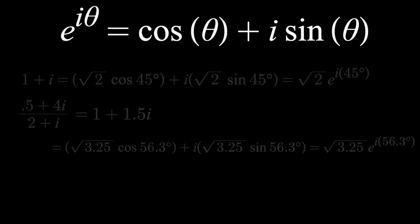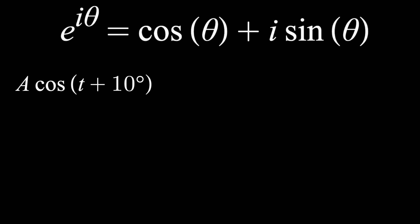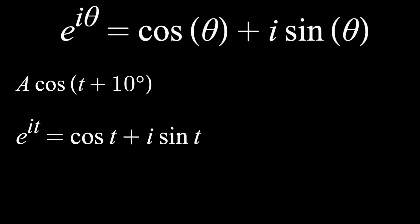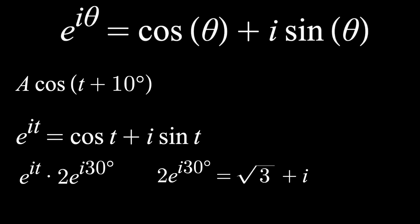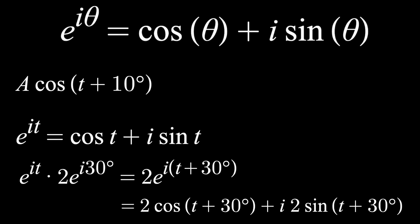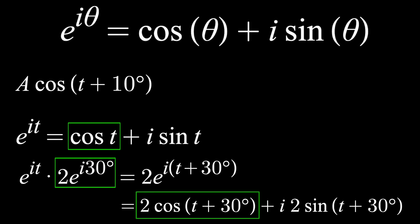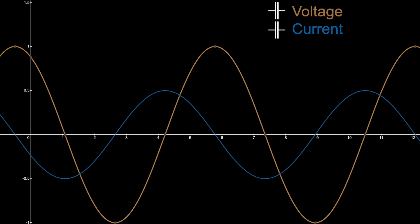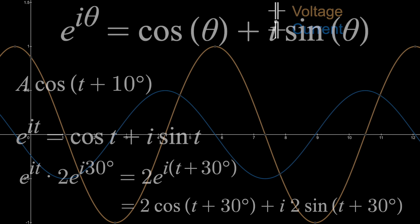This is useful because when given a sinusoid, there's no real constant you can multiply it by to change the phase — A here only changes the amplitude. But if you have e to the it, which can be written out with sinusoids, and then multiply it by some complex constant, let's say 2e to the i times 30 degrees, we can use simple rules of exponents to get our answer. Then from Euler's formula, we can write it out. The real part started out as cosine t; after multiplying by just a complex number, the real part of the output is still just a cosine function, but with a different amplitude and phase — which is exactly what we observe with voltage versus current in a capacitor or inductor.